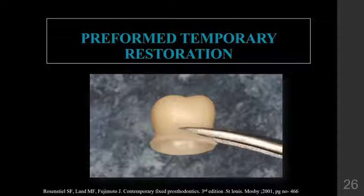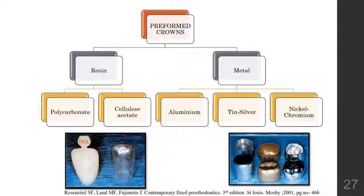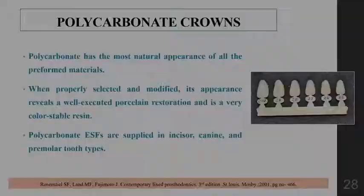Preformed crowns are available commercially and require relining with an acrylic material and modification for fit. They are limited to single restorations. Preformed crowns are divided into resin and metal types. Resin types include polycarbonate and cellulose acetate, while metal types include aluminum, thin silver, and nickel chromium.